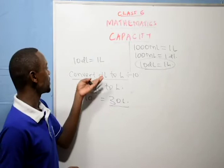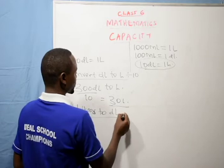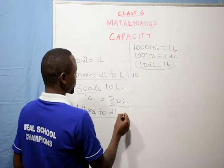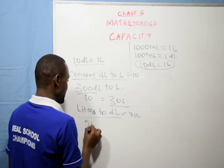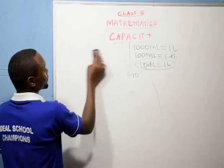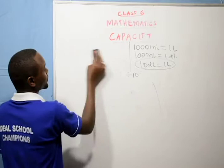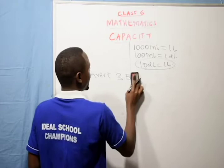The vice versa is the same. When converting liters to deciliters, we multiply by 10 because 10 deciliters is equivalent to 1 liter. For example, convert 5 liters to deciliters: 5 times 10, which is 50 deciliters.